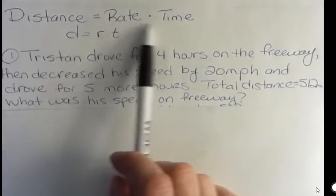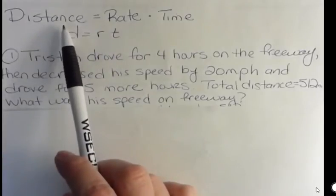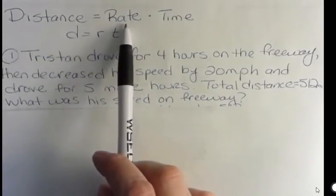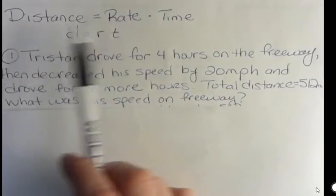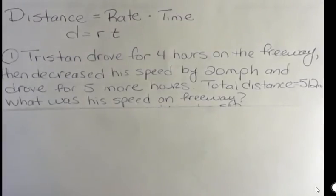You know that formula. If you wanted to know how far you've traveled in your car, and you knew that you were going 50 miles an hour for three hours, you'd say 50 times 3 and you'd know you'd gone 150 miles, right? So that's the basic formula that we're going to use.